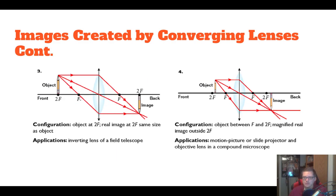If our object is right at 2F, notice we've got the same three rays — one parallel bounces through F, one through the center keeps going, and one through F and then parallel. It forms the image right at 2F, and it's the exact same size.